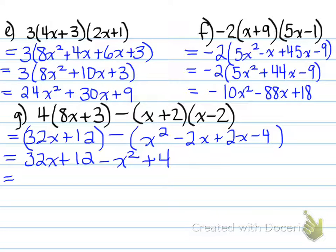If you decided to expand it with the minus 2 and the plus 2, you could have, but it would have eliminated anyways. So we have 32x plus 12 minus x squared plus 4. And finally, we have to rearrange it in order from highest degree to lowest degree. And we have negative x squared plus 32x plus 16 as our final answer.